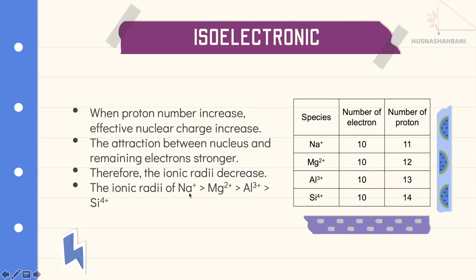The ionic radius of Na⁺ is bigger than that of Mg²⁺, which is bigger than Al³⁺, which is bigger than Si⁴⁺. Silicon has the greatest number of protons, so it attracts the electrons most strongly. Even though all species have the same number of electrons, Si⁴⁺ has the highest proton number, giving it the strongest nuclear attraction and therefore the smallest ionic radius.